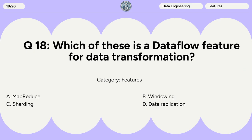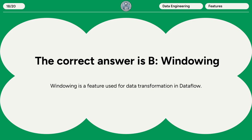Question 18: Which of these is a Dataflow feature for data transformation? A. MapReduce. B. Windowing. C. Sharding. D. Data replication. The correct answer is B. Windowing. Windowing is a feature used for data transformation in Dataflow.